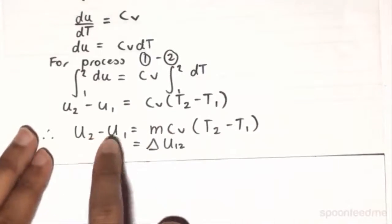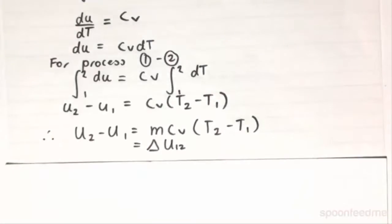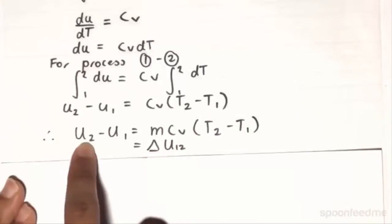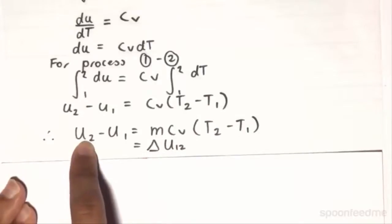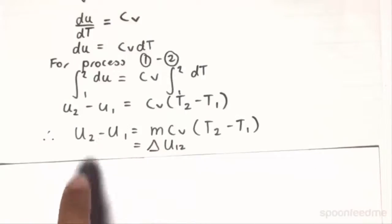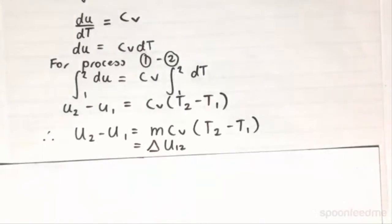And as you will notice here, U2 minus U1 is actually the change in internal energy from process 1 to 2. Process at state 2 is the final and state 1 is the initial. So the change in U12 is equal to U2 minus U1.